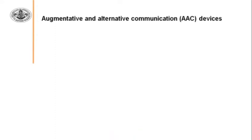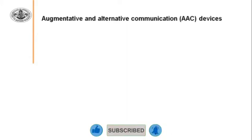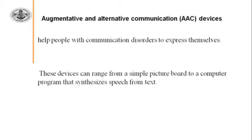The next type is Augmentative and Alternative Communication Devices, known as AAC. These are very important devices used for communication and expression purposes. If we face a problem saying something and want to communicate, we can use these augmentative and alternative communication devices. They help persons with communication disorders to express themselves. These devices can range from simple picture boards to a computer program that synthesizes speech from text — they have a very wide range.